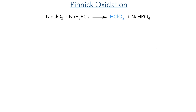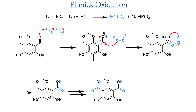These aldehydes then took part in a Pinnick oxidation. Sodium chlorite first reacts with monosodium phosphate to produce chlorous acid. This first protonates the aldehyde, and the chlorite then acts as a nucleophile to attack the carbonyl centre. The resulting tetrahedral intermediate then undergoes a hydrogen abstraction, oxidising the carbon–oxygen bond to form the carboxylic acid upon elimination of hypochlorous acid. As we saw before, both sides of the molecule react, and two carboxylic acids were formed.